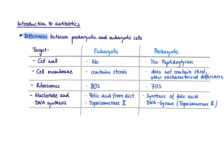First of all, bacteria have a cell wall. We don't have cell walls, and this makes it a perfect target. The osmotic pressure in bacteria is very high, and therefore they require an additional cell wall to make sure that they don't burst. Prokaryotic and eukaryotic cells both have cell membranes, but they are slightly different, so there are some targets that arise from these differences.